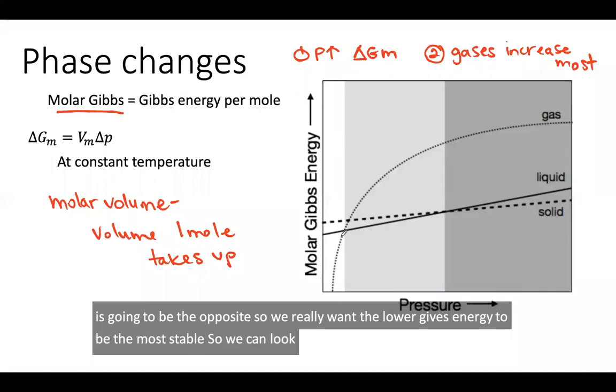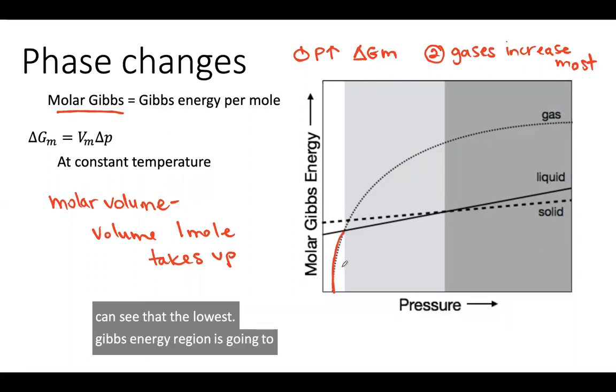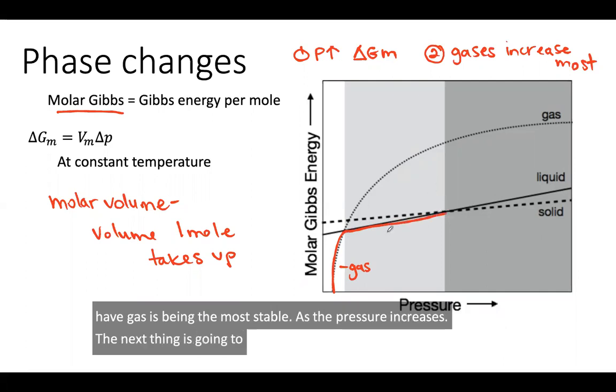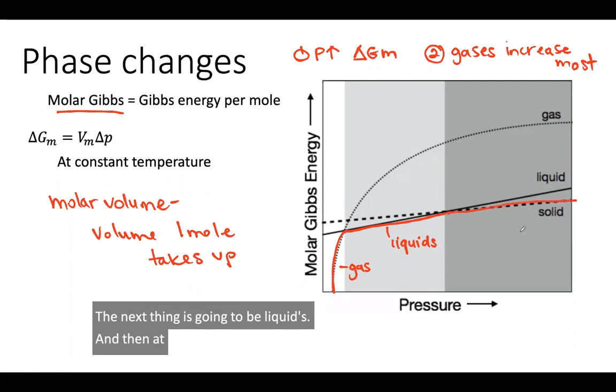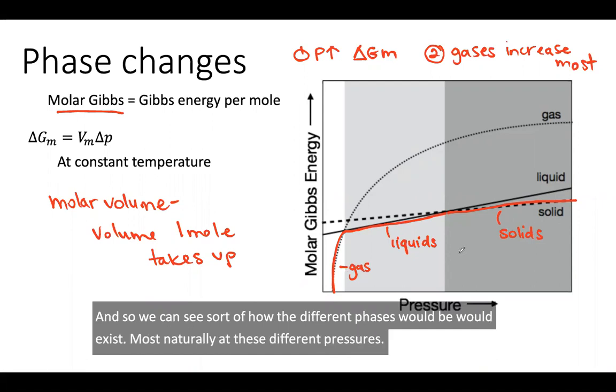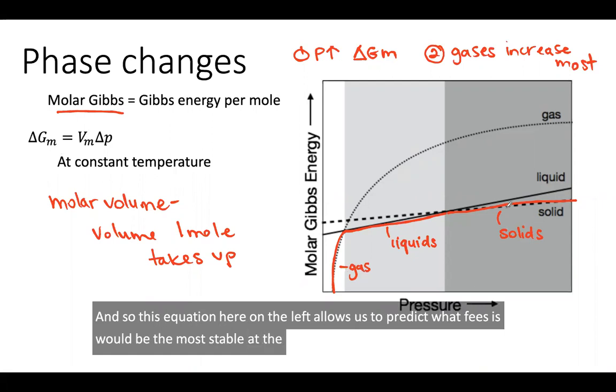We can look at this white region and see that the lowest Gibbs energy region is going to correspond to the gas. Here we have gases being the most stable. As the pressure increases, the next thing is going to be liquids, and then at the highest pressure, it's going to be solids. We can see how the different phases would exist most naturally at these different pressures. This equation here on the left allows us to predict what phases would be the most stable at the different pressures for different substances.